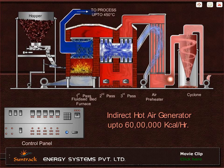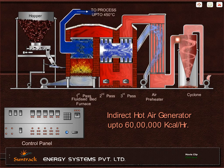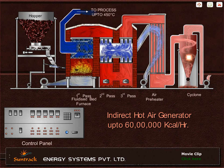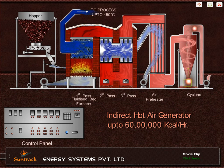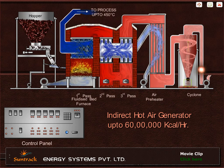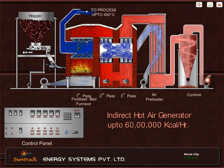Flue gases out of the air preheater are passed through a cyclone to remove ash particles, then through the induced draught fan and to the chimney.